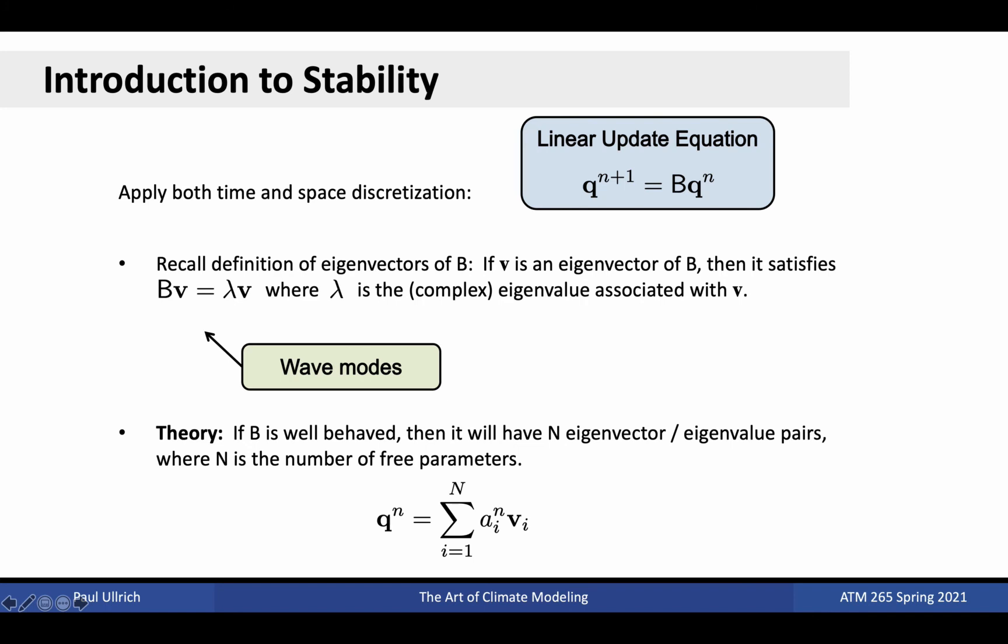Our starting point will be a linear update equation like the one shown here in the top right. Basically, we are assuming that there is some linear combination of elements of q^n such that, when combined, give q^(n+1). If our problem is non-linear, such as in the case of a discretization applied to the atmospheric fluid equations, then we can linearize the system by assuming small perturbations about a reference state and then analyze the resulting system for stability. By construction, B is a square matrix. From linear algebra, we know that if the matrix B is well-behaved, then it possesses a set of eigenvectors, one eigenvector for each row of the matrix. These eigenvectors are the modes of the discretization, and for wave modes that are well represented by the discretization, correspond to the wave modes we discussed in the context of the spectral transform method. Each of these wave modes then has a corresponding eigenvalue, which is the scalar enhancement of the magnitude of the wave mode under the application of the matrix B.